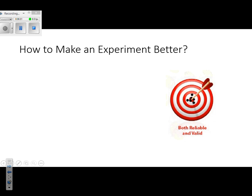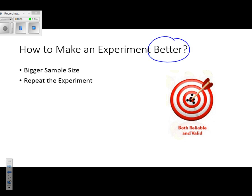The last thing for this lab is how can we make our experiment better — more reliable and more valid. One thing you can do is use a bigger sample size. You can also repeat the experiment. When they say 'better,' the words they'll typically use are either 'more reliable' or 'more valid.' And that's it for making connections.